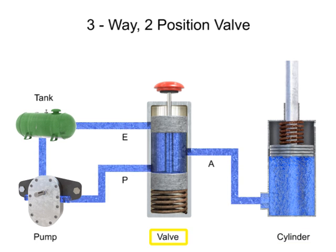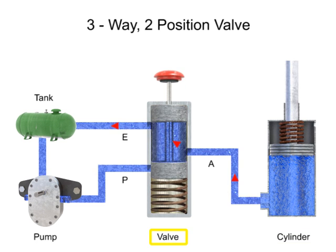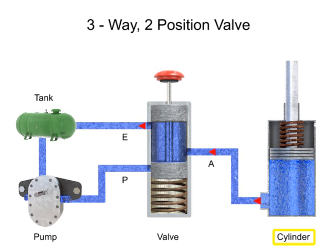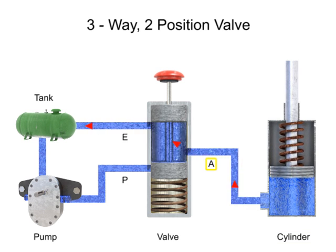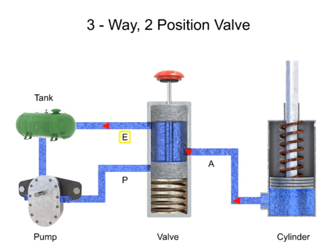When the valve de-energizes, the spool returns to position 1, pressure port P is blocked and exhaust port E is opened. The cylinder retracts and fluid flows from the cylinder through port A and out exhaust port E. From there, the fluid returns to the tank.